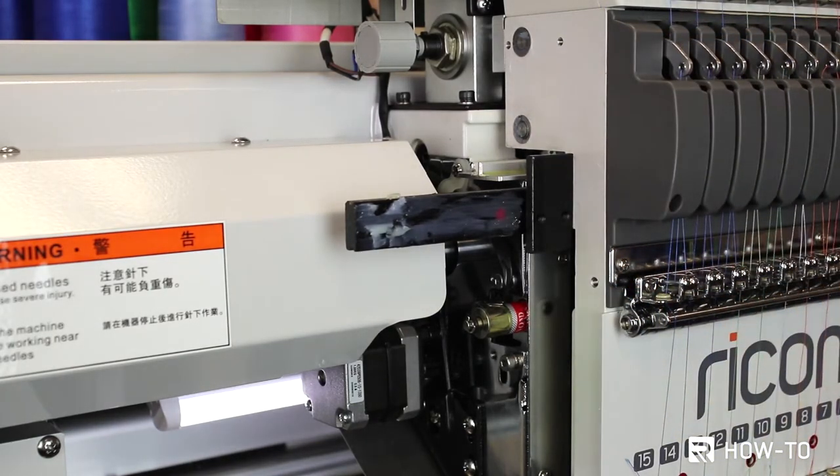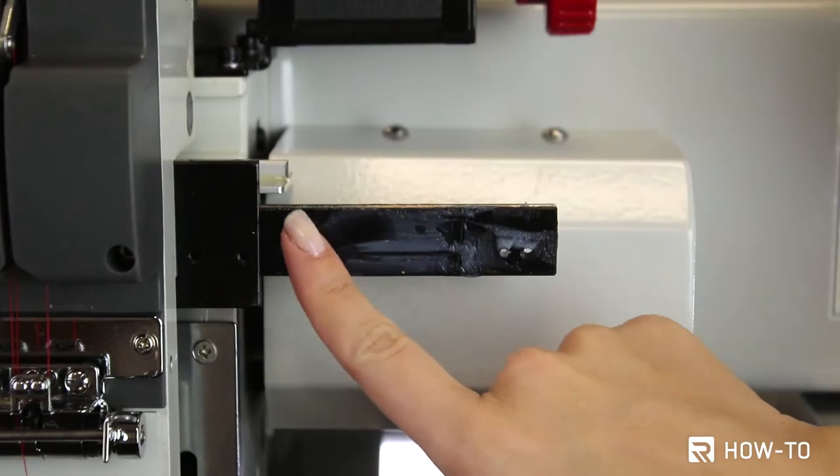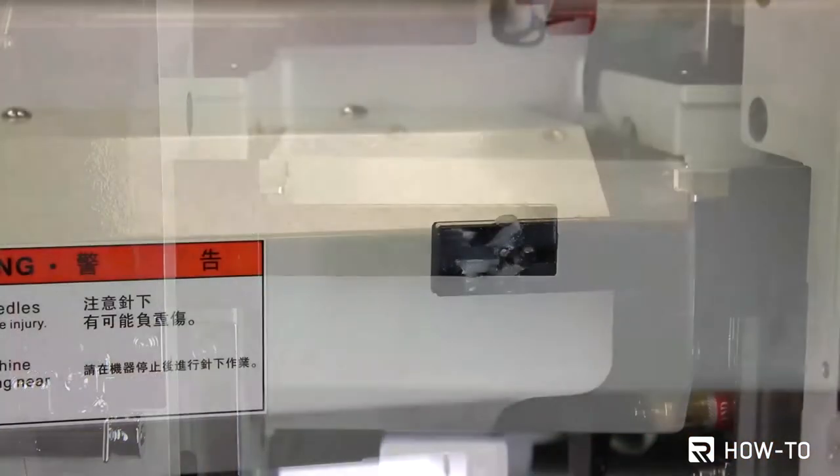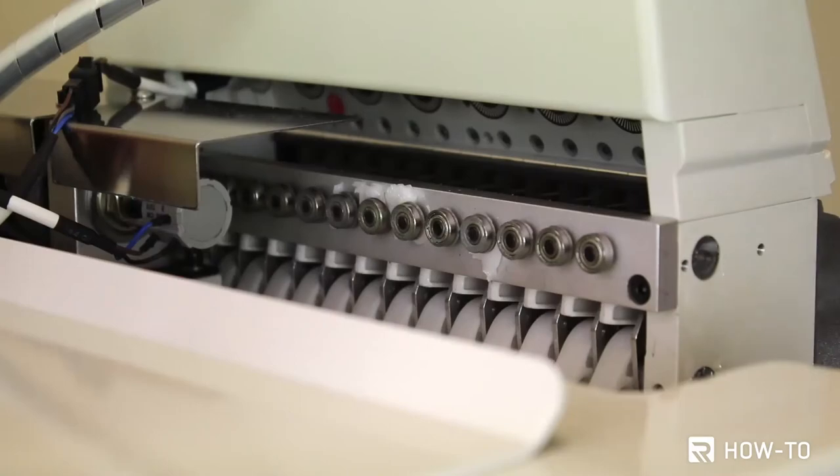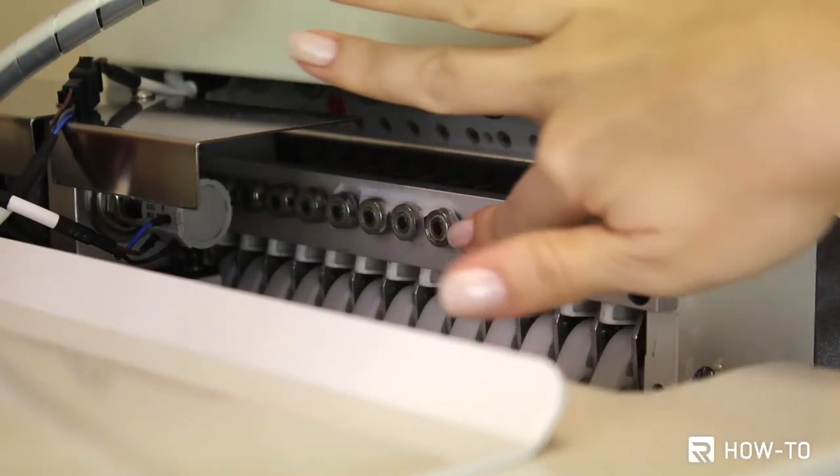Once every three to five months, apply white lithium grease to the black metal bar on the machine head. Also apply white lithium grease to the wheels located on the back of your machine head.